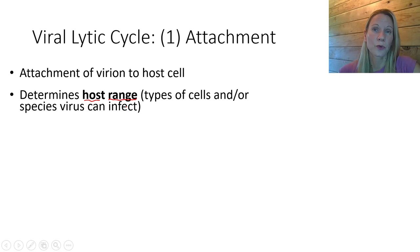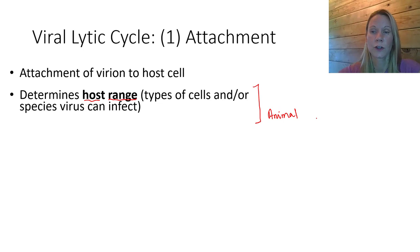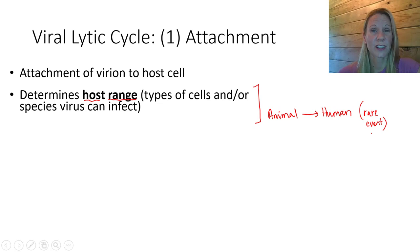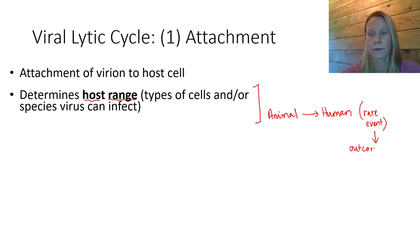Is it possible for a virus to pass from an animal into a human? Yes, it is possible — these are rare events. And when a virus can pass from an animal to a human, the outcome is usually a severe infection. If it persists, it may even become a pandemic. We're living in a pandemic right now as a result of this situation — a virus passing from an animal into a human.